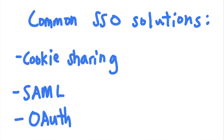Welcome back to the Security Simplified series. Last time, we talked about some of the most common ways applications implement single sign-on and how attackers can take over other people's accounts when these mechanisms are implemented improperly. This time, let's talk about another popular SSO mechanism, OAuth, and how attackers can compromise it.